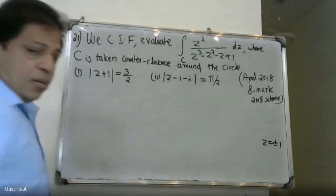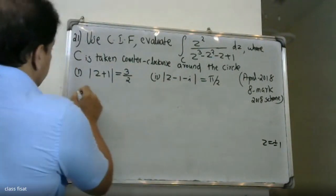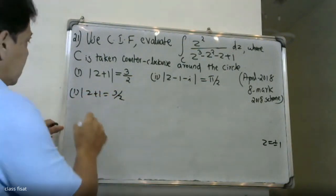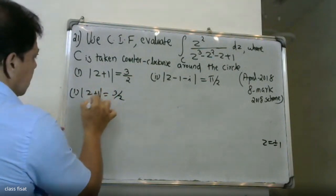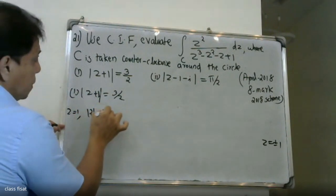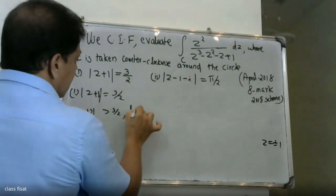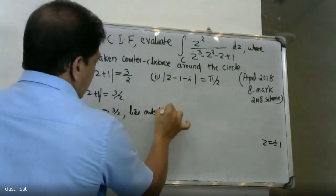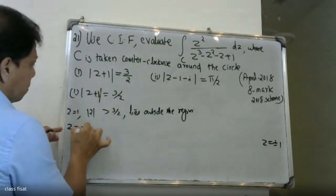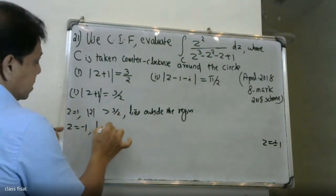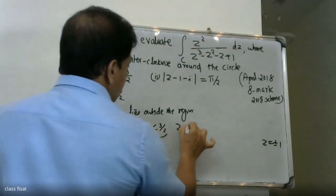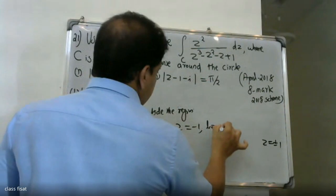For the first question, the contour is the circle with modulus of z equal to 3/2. Checking z equals 1: the modulus of 1 is 1, which is less than 3/2, so z equals 1 lies inside. Checking z equals minus 1: the modulus is 1, which is also less than 3/2, so z equals minus 1 also lies inside.